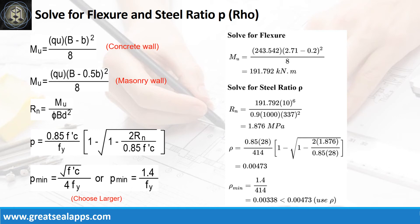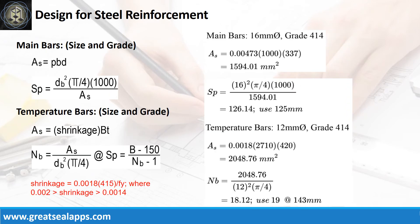Given resistance factor equals 0.9, b equals 1000 mm, and d equals 337 mm, the beam design ratio Rn equals 1.876 MPa and reinforcement ratio ρ equals 0.00473. Given ρ equals 0.00473, b equals 1000 mm, and d equals 337 mm, the area of steel for main bars is 1594.01 mm² and the spacing for 16 mm bar is 125 mm.